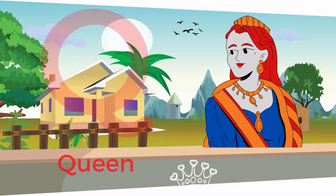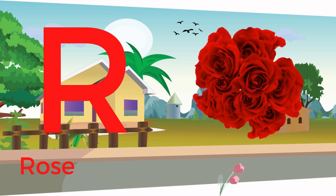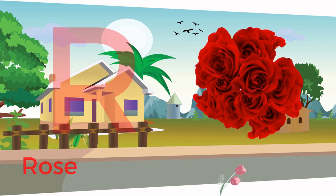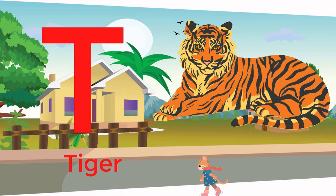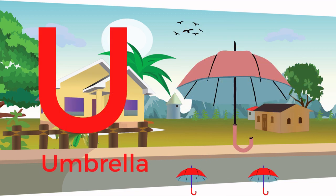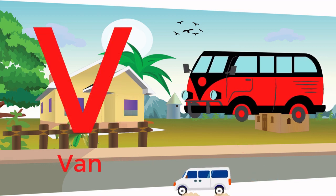R for Rose. S for Snake. T for Tiger. U for Umbrella. V for Van.